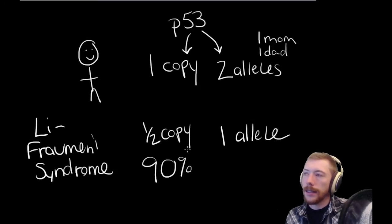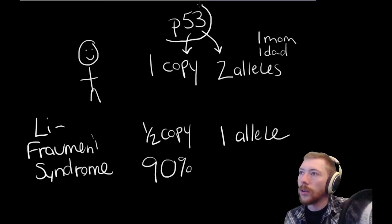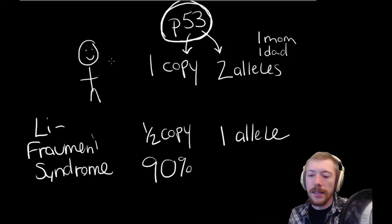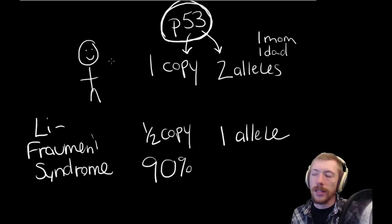And it has to do with the loss of this P53 allele. So you can imagine that this DNA damage that's happening in the cell isn't getting corrected the way it's supposed to, and so cancer rates are much higher.